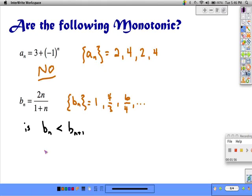So what we're questioning is, is 2n over 1 plus n, is that always less than the n plus 1 term.